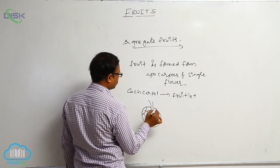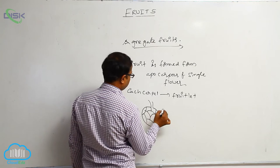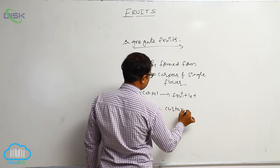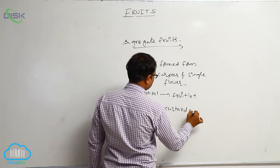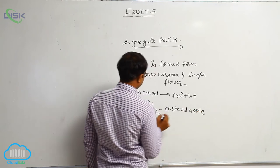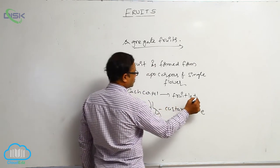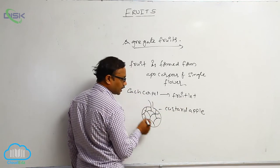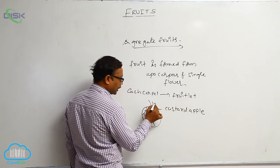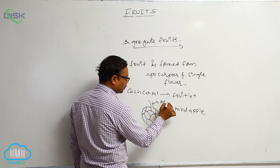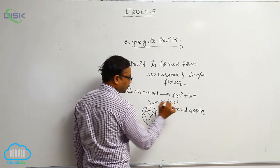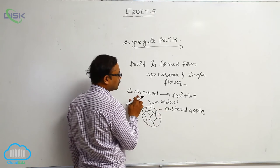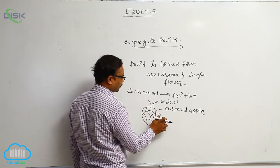For example, it is known as a custard apple. In custard apple, all fruitlets are combined at the base of a pedestal to form a fruit. So that is known as aggregate fruit. Example: custard apple.